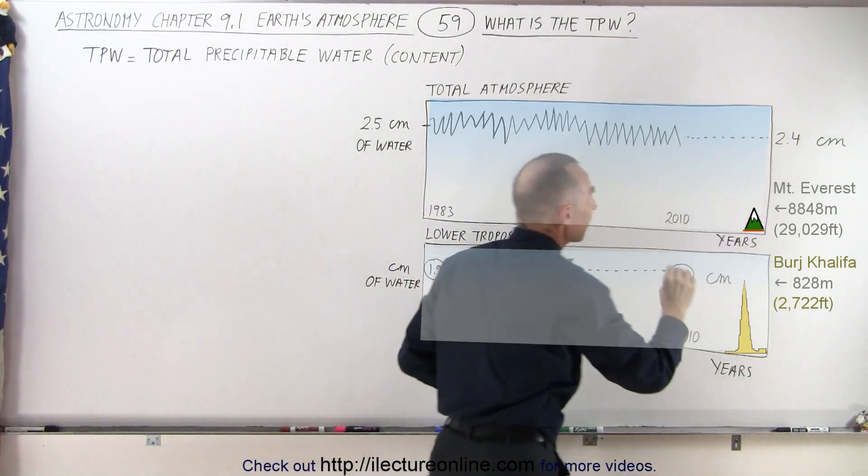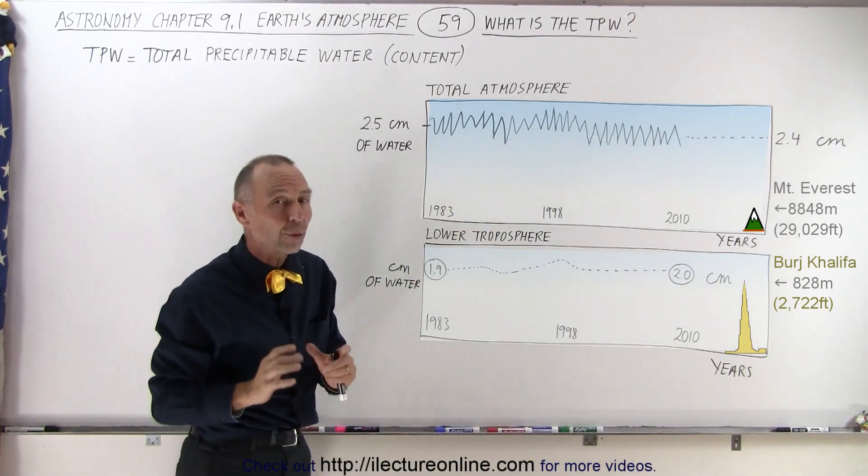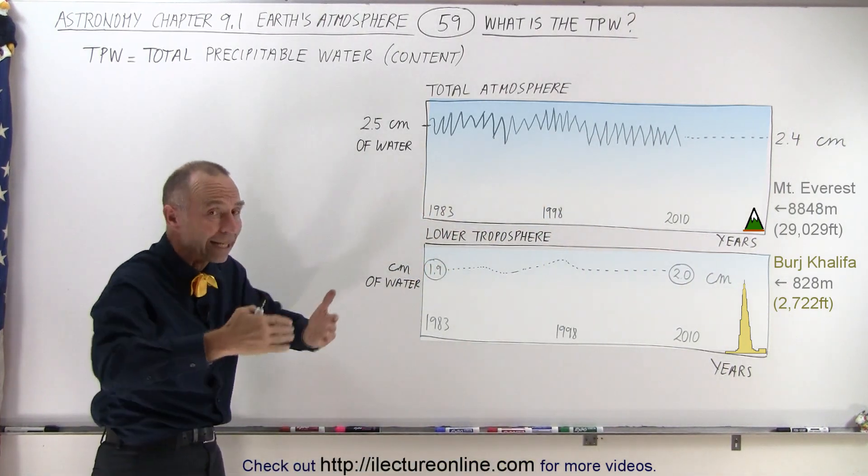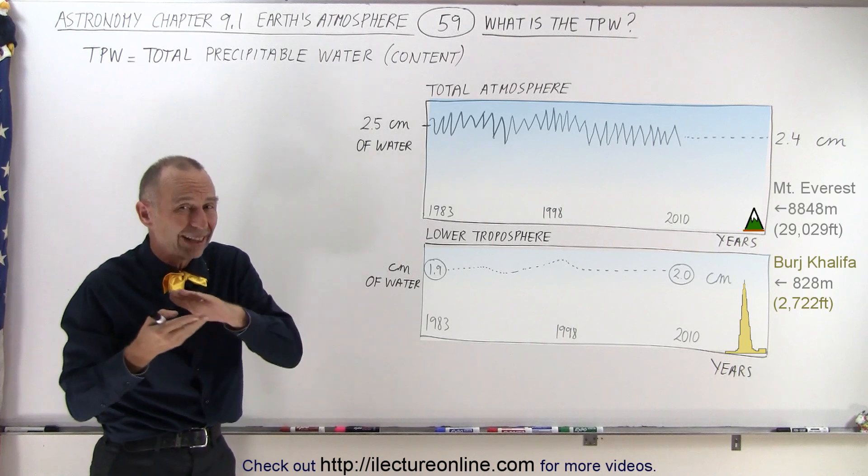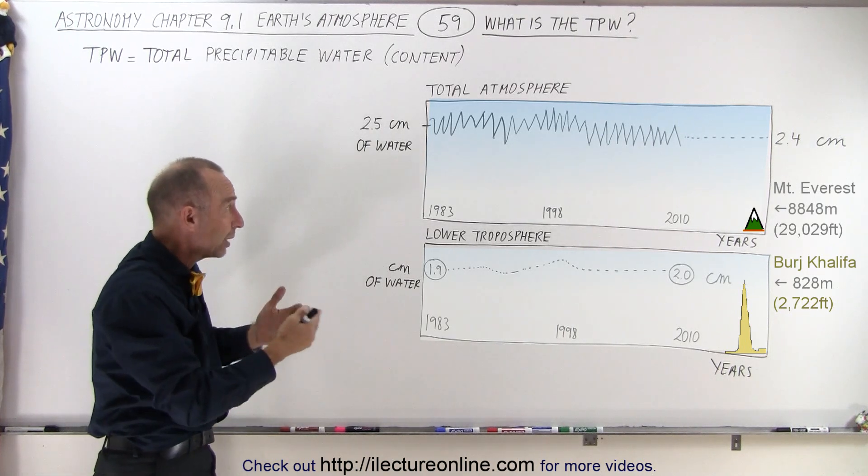the number had dropped slightly to 2.4 centimeters, which should indicate that in the total atmosphere there's actually less water now than there was then.